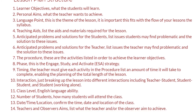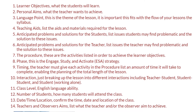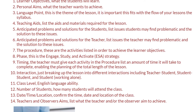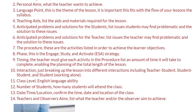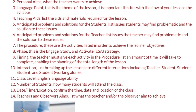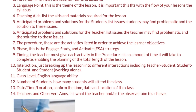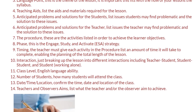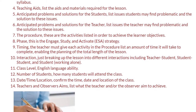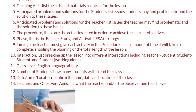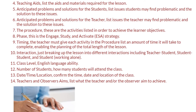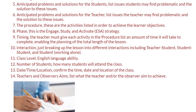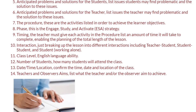7. The Procedure — these are the activities listed in order to achieve the learner objectives. 8. Phase — this is the Engage, Study, and Activate (ESA) strategy. 9. Timing — the teacher must give each activity in the procedure list an amount of time it will take to complete, enabling the planning of the total length of the lesson. 10. Interaction — breaking up the lesson into different interactions including teacher-student, student-student, and student working alone.